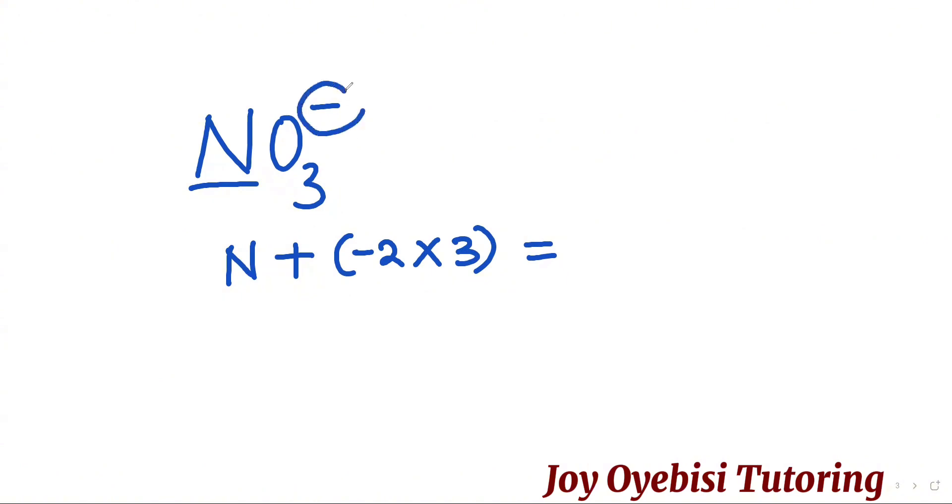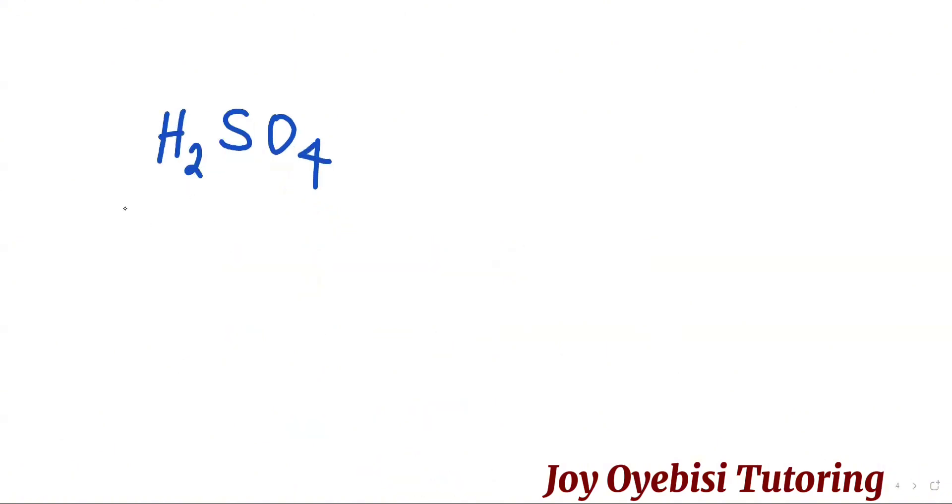So you have negative 2 times the number of oxygen, which is 3, and this will be equal to negative 1. That is because the rule for polyatomic ions states that the sum of the individual oxidation numbers in a polyatomic ion will be equal to the charge. So for this one, the charge is negative 1. So N, negative 2 times 3, negative 6, will be equal to negative 1. Now N will be equal to negative 1 when that negative 6 crosses over as positive 6, and therefore we have a positive 5 as nitrogen oxidation number.